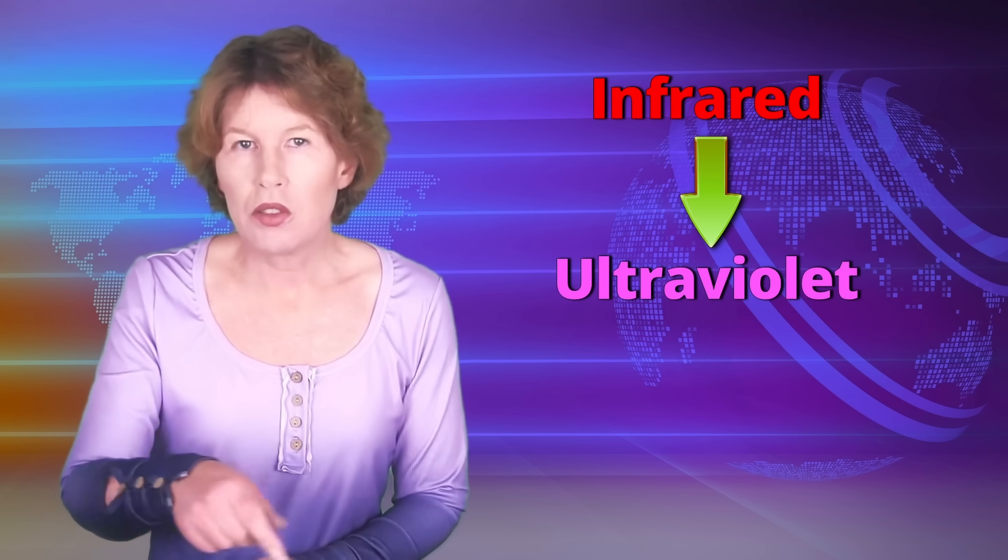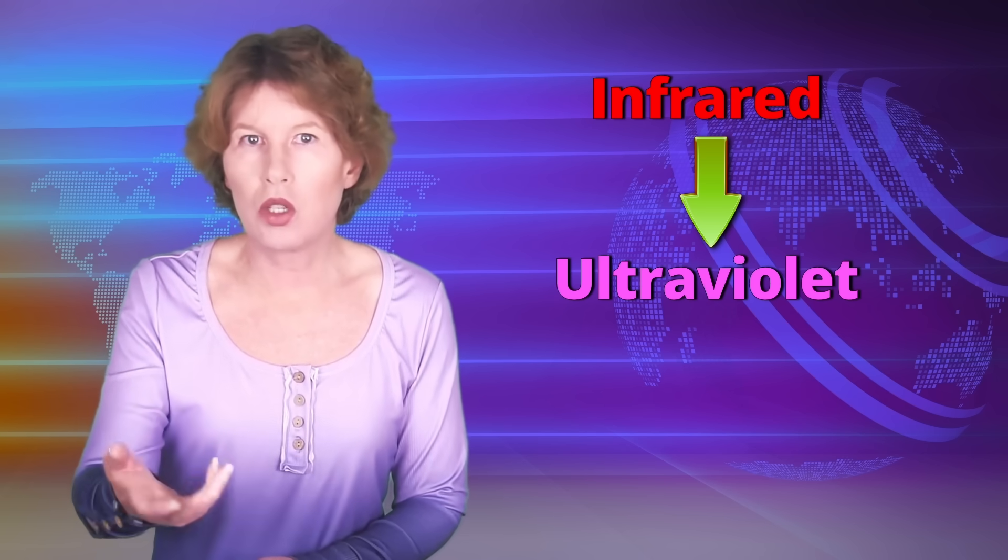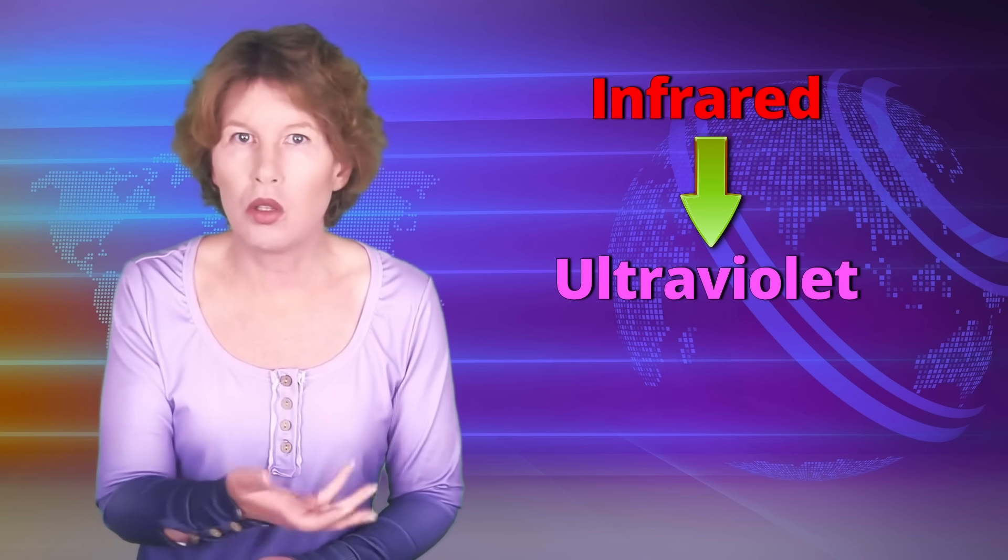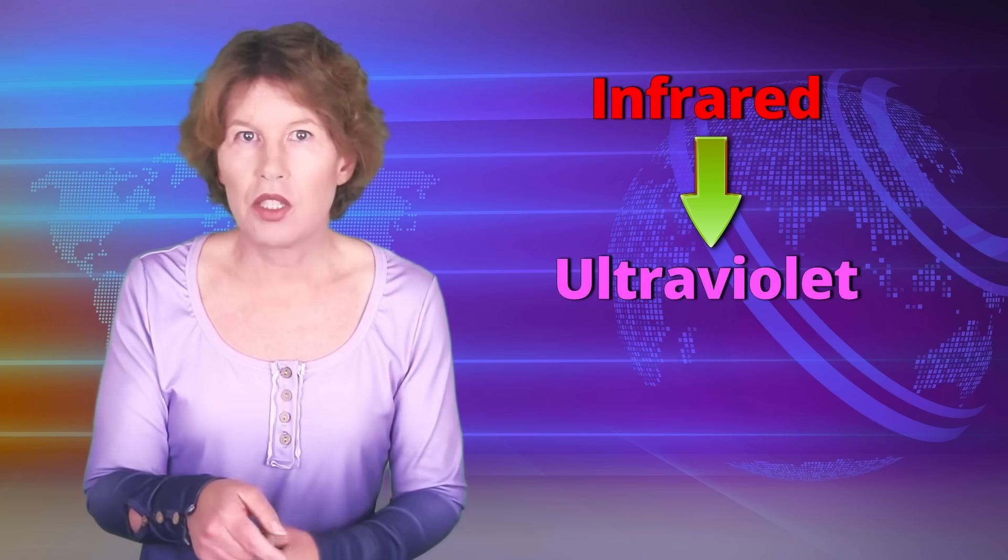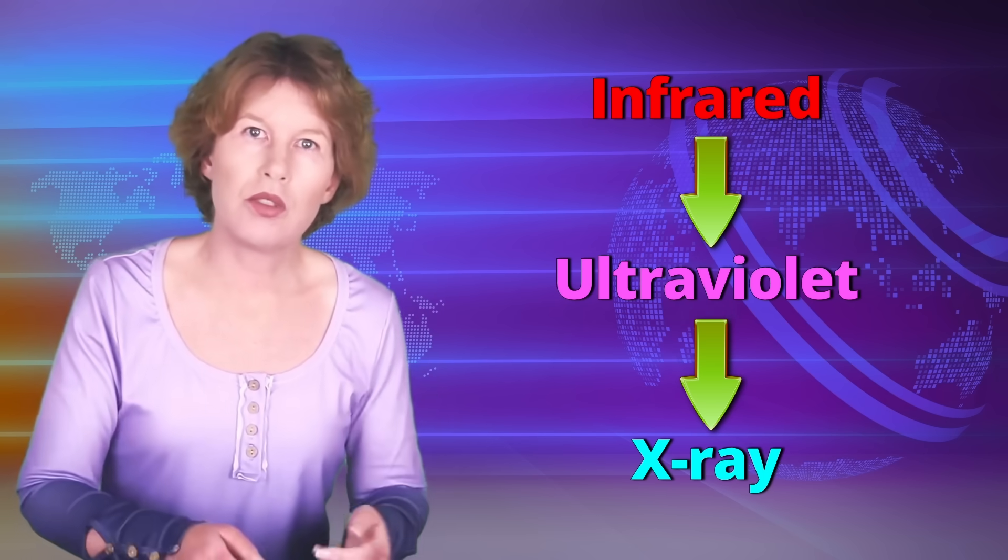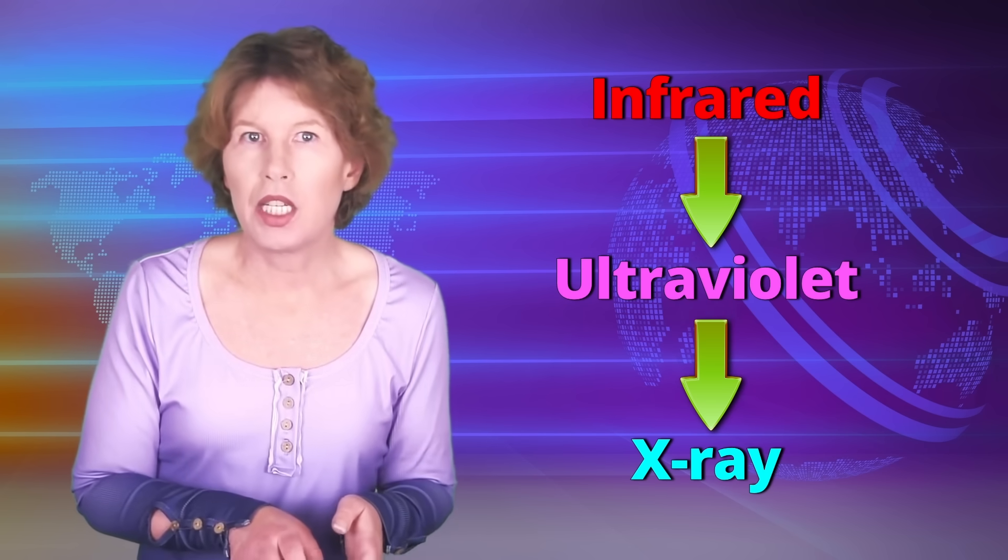The NIF also loses a lot of energy because they don't directly shoot the UV beams at the target. After pumping infrared lasers, they convert the light to ultraviolet. But then they bounce the UV light off the golden walls of the pellet that holds the fuel, and that converts it to X-rays and that goes into the fuel. That is very inefficient.